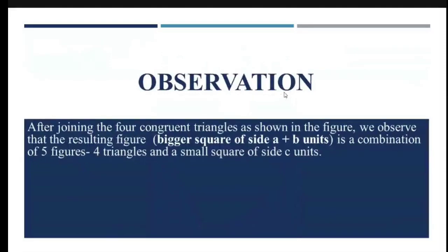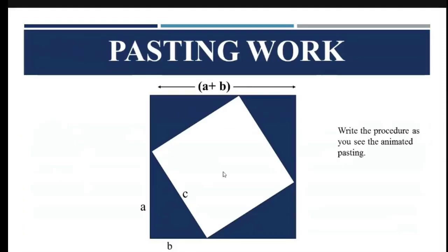What is the observation? After joining the four congruent triangles as shown in the figure, we observe that the resulting figure, the bigger square of side A + B units, is a combination of five figures. Let's go back to the figure and see. You have one, these are five figures that you get. This is triangle 1, triangle 2, triangle 3 and triangle 4.